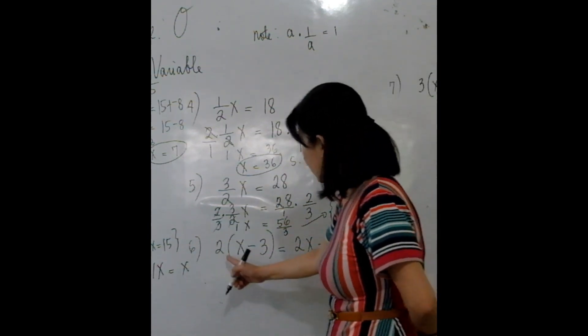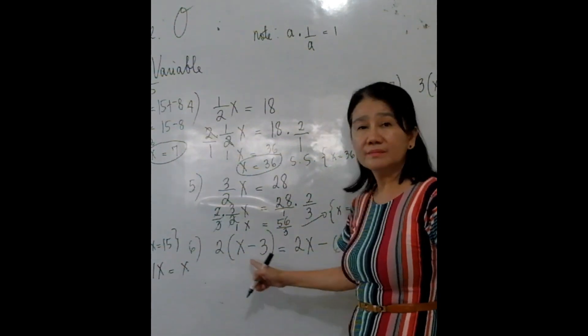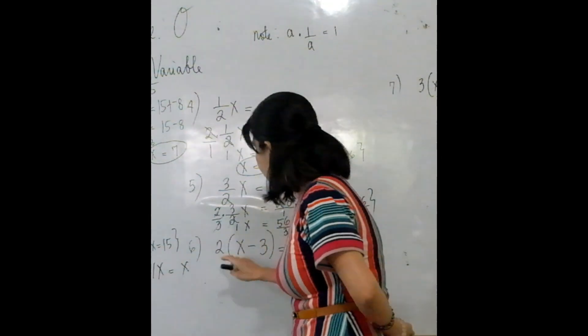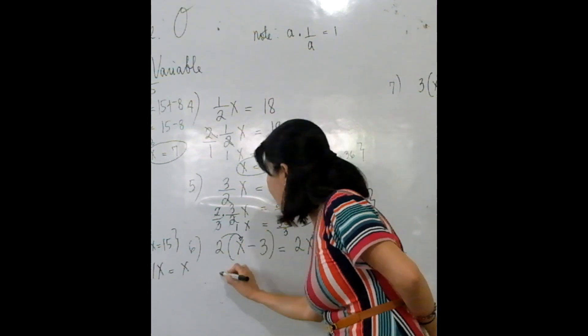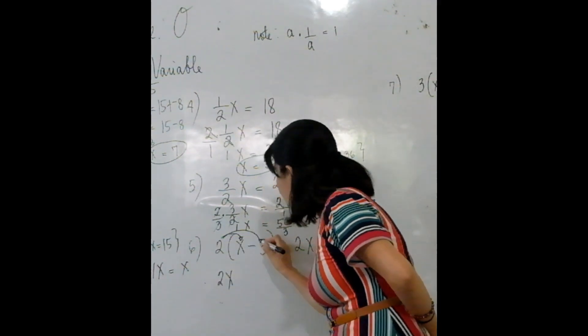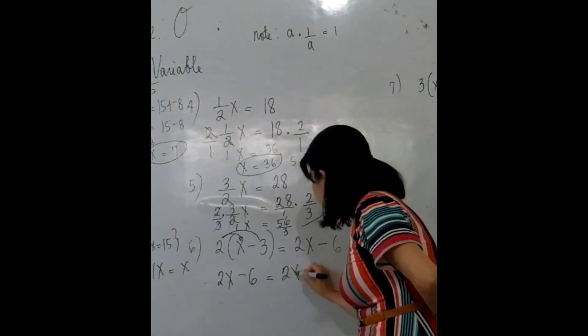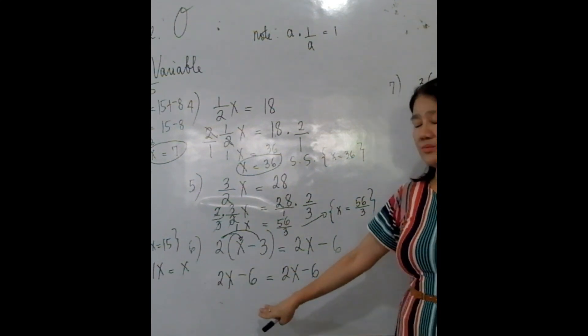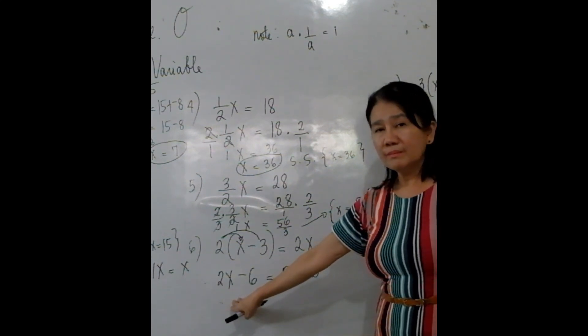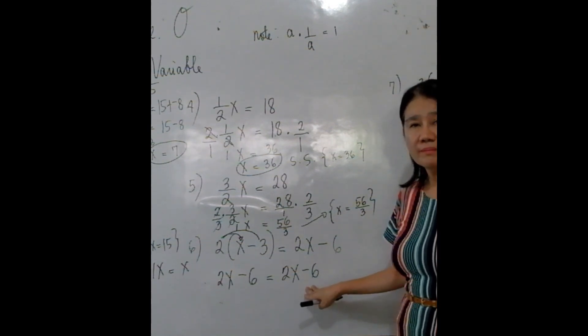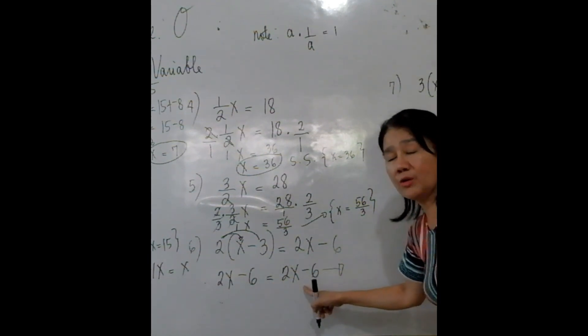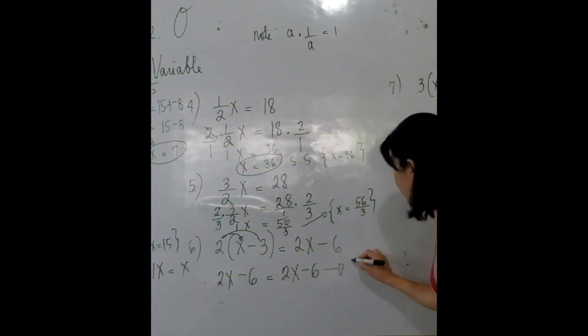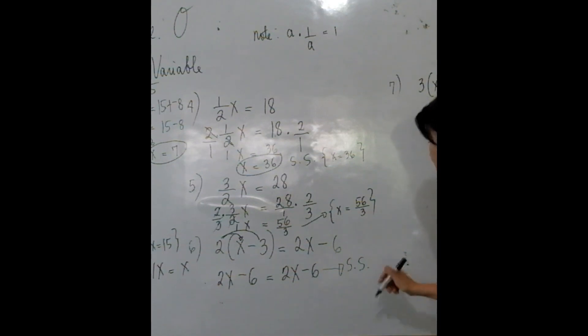Problem number 6. This time I put parenthesis in. So what do you do if you have parenthesis? Remember, distributive property of multiplication over addition tells us to distribute 2. So we have here 2X - 6 = 2X - 6. Now try to observe: the left and the right side of the equation are equal. In this case, if you see that the left side and the right side of the equation are equal, you can say directly the solution set is the set of all real numbers.